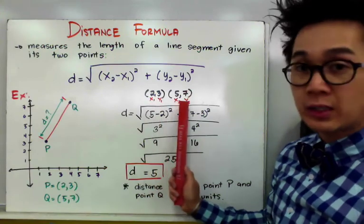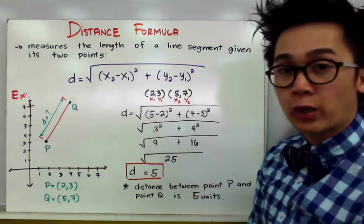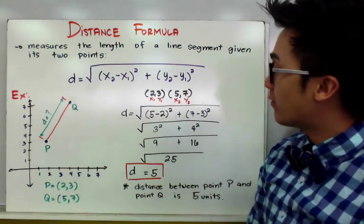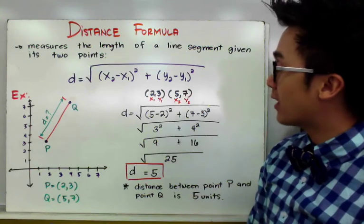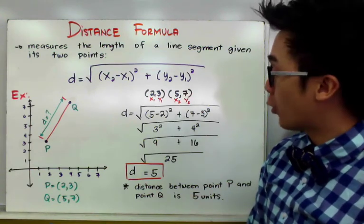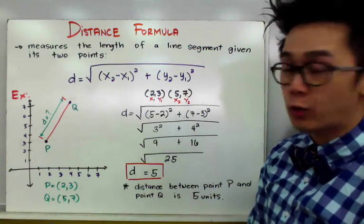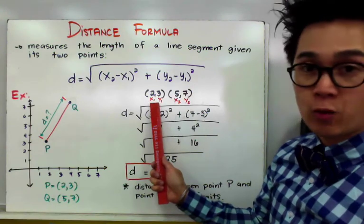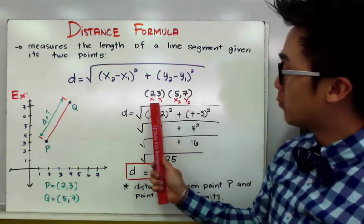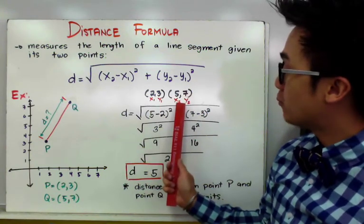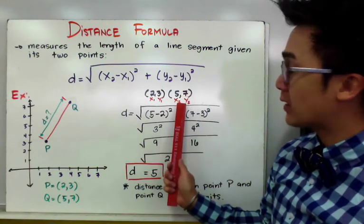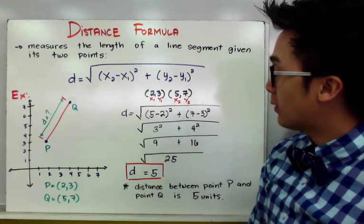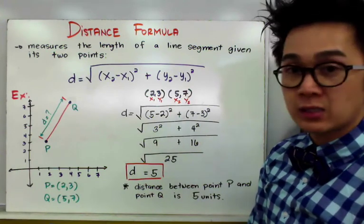The first step we need to do is to organize our points and label each of them by their respective x and y coordinates. So our first point is x sub 1 and y sub 1, and the second point will be x sub 2 and y sub 2. Now using the formula and by direct substitution: